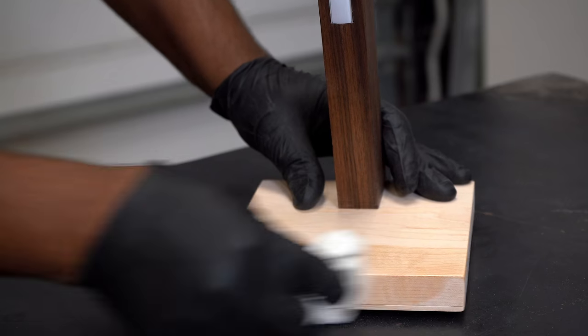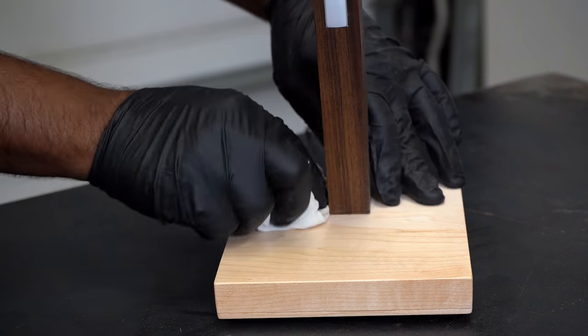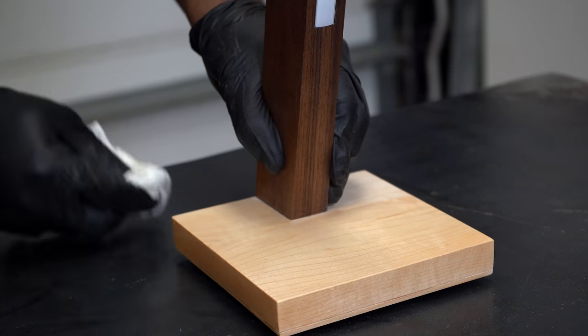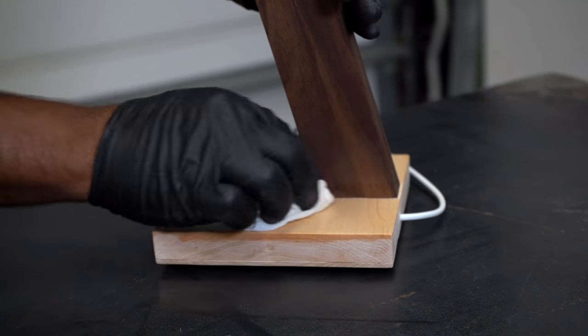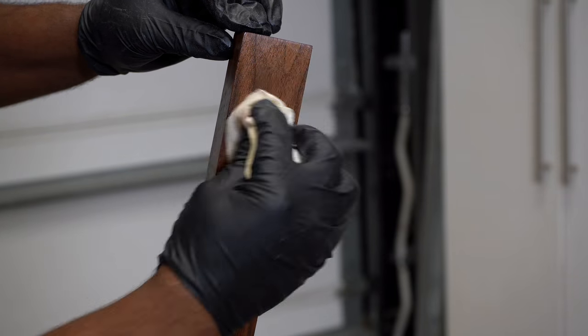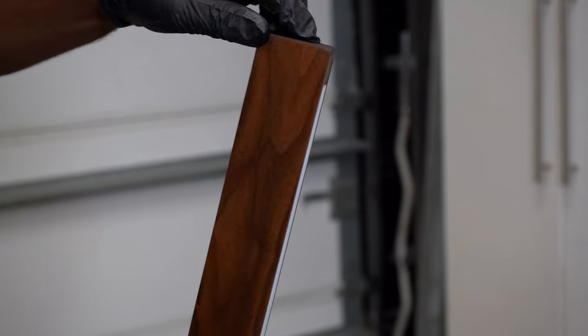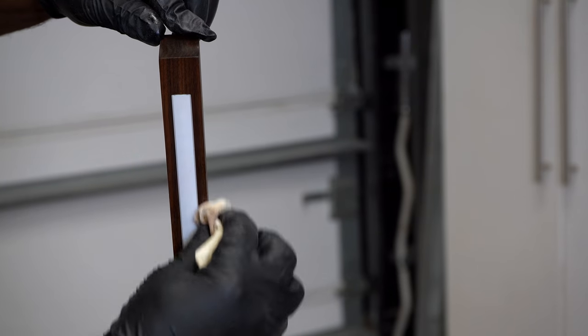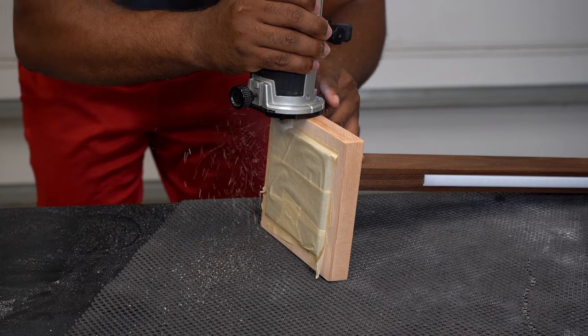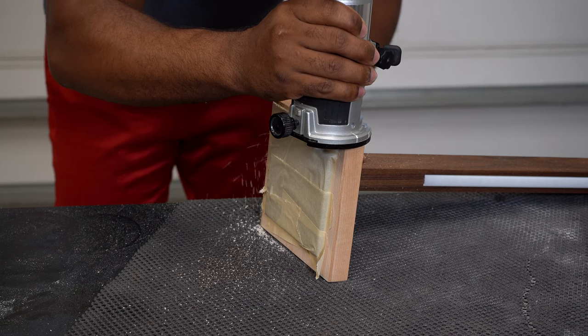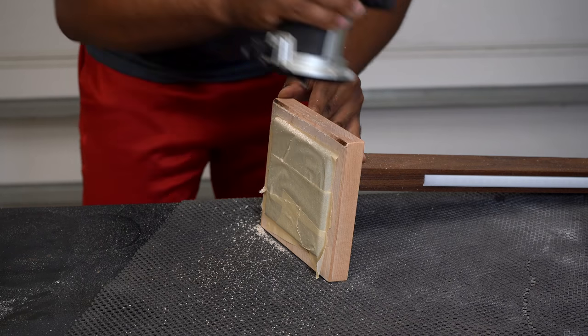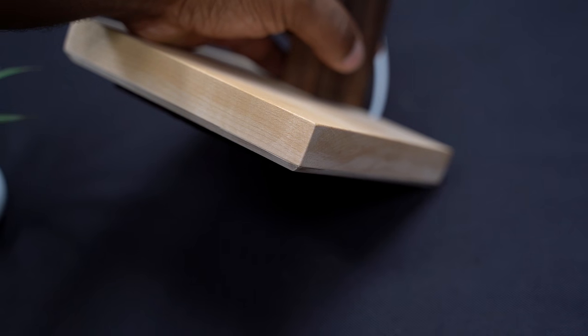After sanding down the lamp, I then finished it off by putting on a couple coats of wipe-on poly. After applying the wipe-on poly, the seam between the two boards showed itself a little too much for my liking. To address this, I used a chamfer bit to take off the edge from the thin piece of lumber. Now this looks a whole lot better.